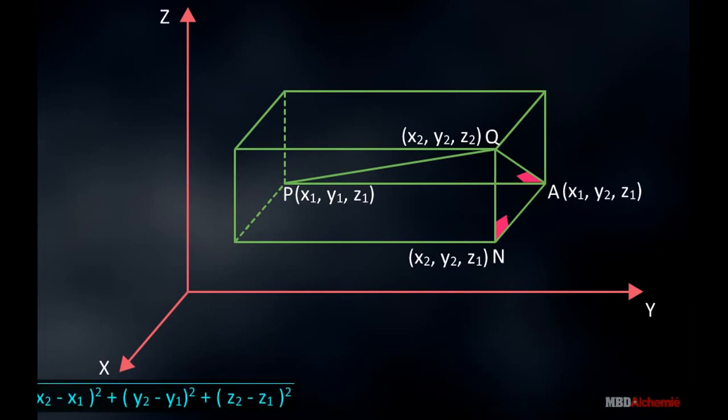Substituting these values in equation 3, we have PQ is equal to square root of square of X2 minus X1 plus square of Y2 minus Y1 plus square of Z2 minus Z1.